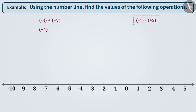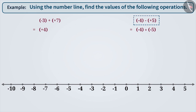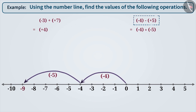To subtract minus 4 and plus 5, first convert subtraction into addition. Keep the first integer as it is and write the addition sign in the place of the subtraction sign. Now, write the additive inverse of the second integer. The additive inverse of plus 5 is minus 5. Since the first integer is minus 4, move 4 steps towards the left from 0. And since the second integer is minus 5, we move 5 steps towards the left of minus 4 on the number line. Thus, we reach minus 9, which is the result of minus 4 plus minus 5.